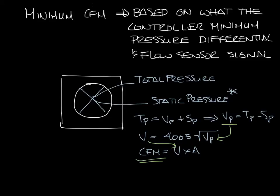Let's talk about this asterisk. I mentioned the minimum pressure differential that the controller could read. The ports off the flow sensor connected to a pressure transducer on the VAV box controller. This pressure transducer is looking at the difference in these two pressures to come up with this differential pressure.